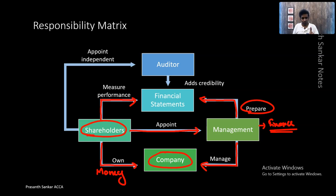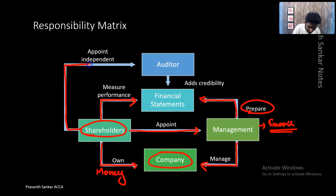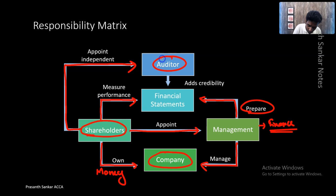So shareholders, when they appoint the management, do believe them but can never trust them in a deeper way. Why? Because they will always be skeptical, thinking the management might do something wrong since they are getting paid every month. What if they made some mistakes and hid them? And then the shareholders will appoint someone independent in nature — that is called the auditor.